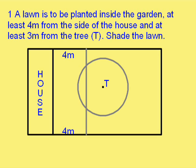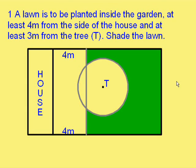Then draw a circle of radius three metres around from the tree. Now we have to work out what's the actual area that needs to be shaded. It's got to be at least four metres from the house, so it can't include any of this rectangle, but it's got to be outside the tree as well. So, that's the shaded region.